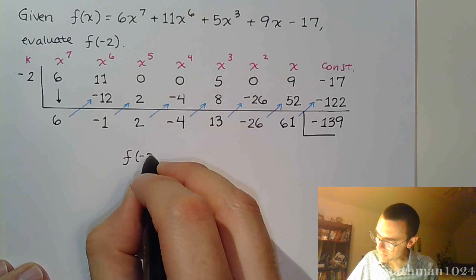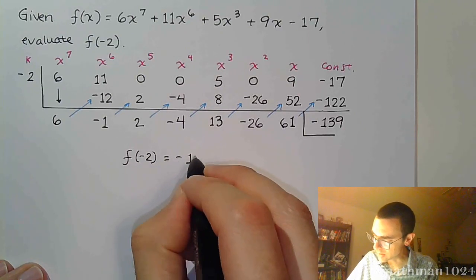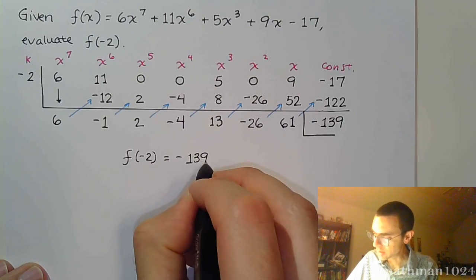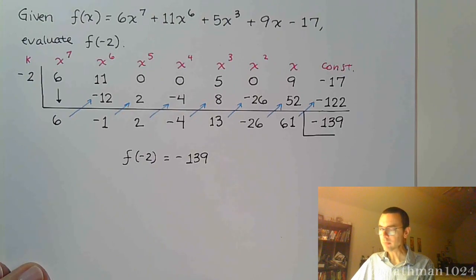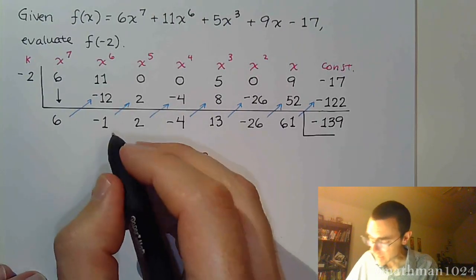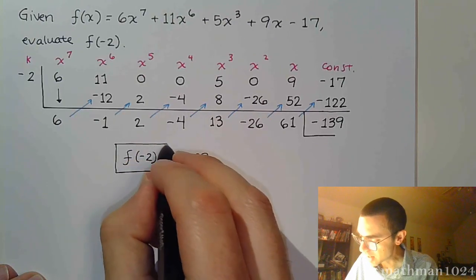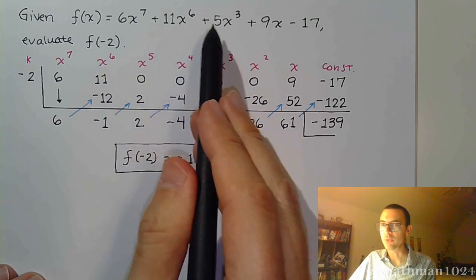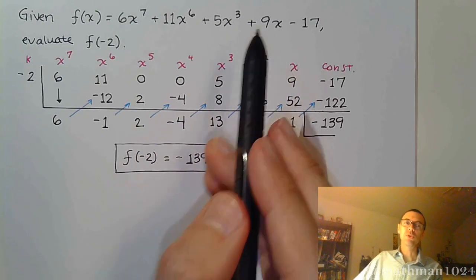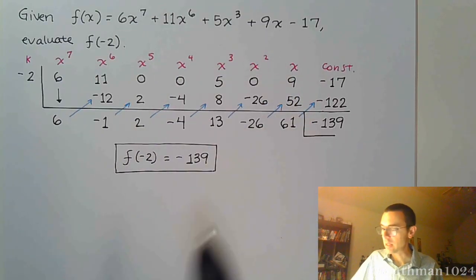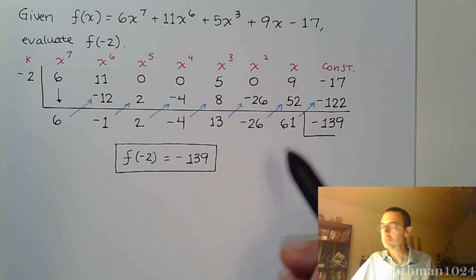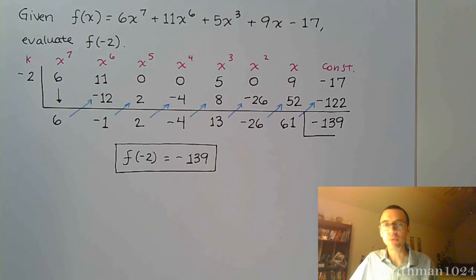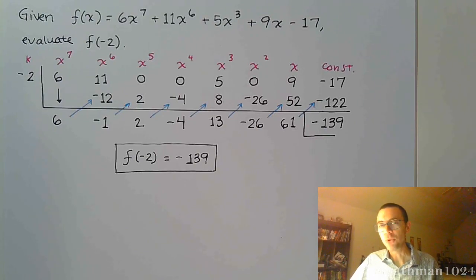So f of negative 2 equals negative 139. To me, this is so much easier and so much faster than if I had taken negative 2 and plugged it in for all of those x's. You see here that when we use synthetic division, the remainder is our answer, and we're done without any problem at all. Hope this helps you — hope you can now dive into the homework and knock these problems out.